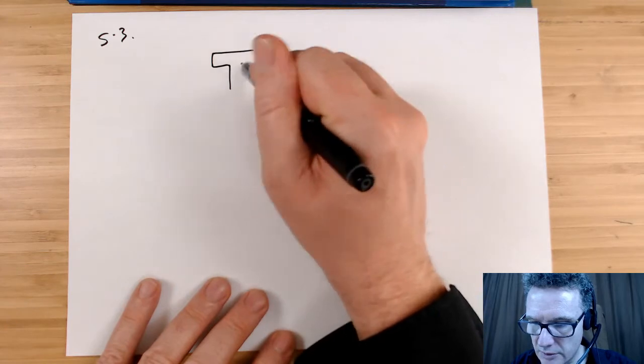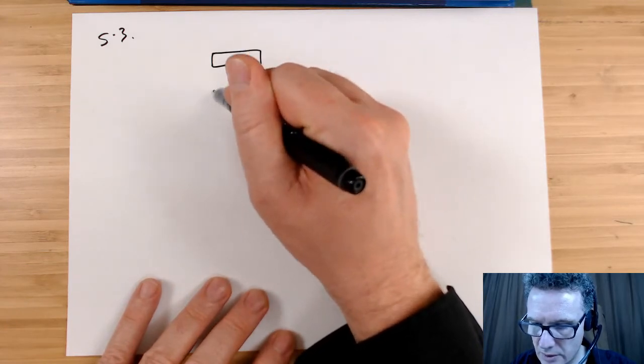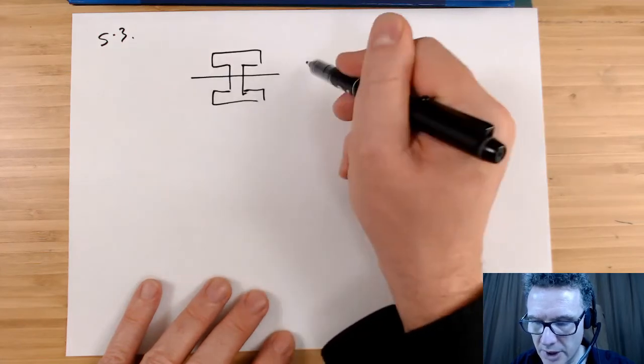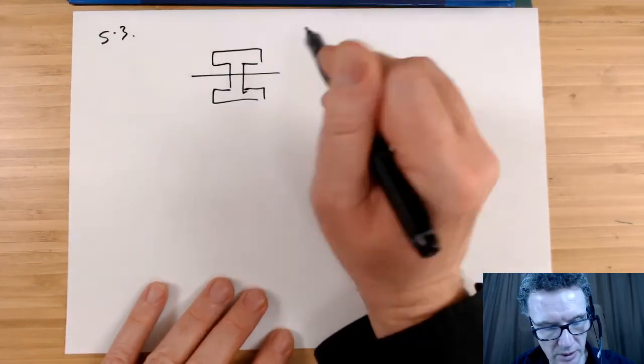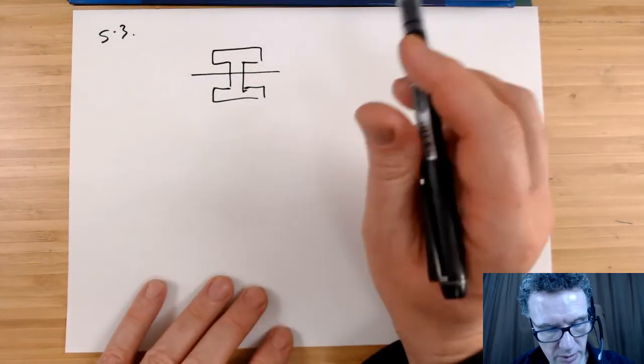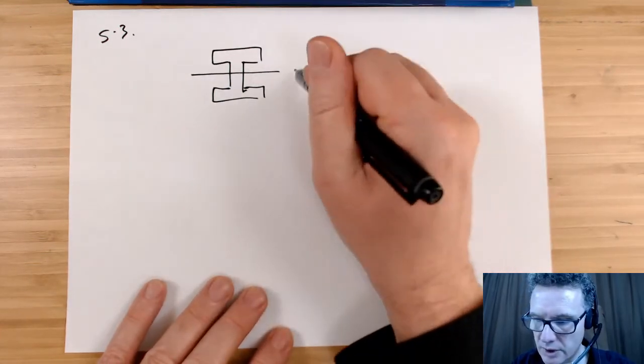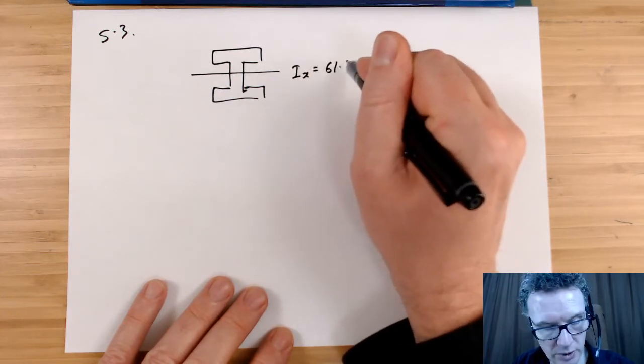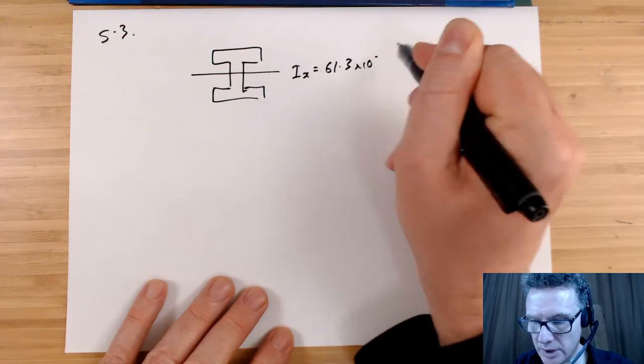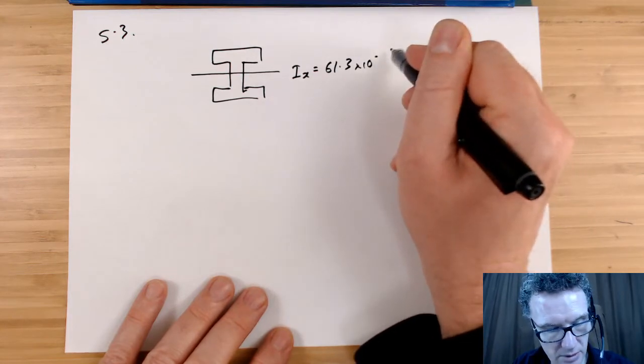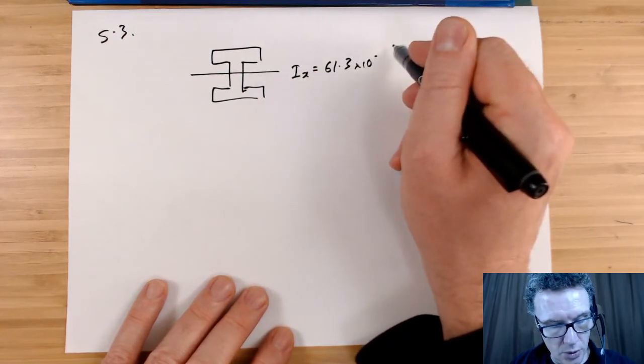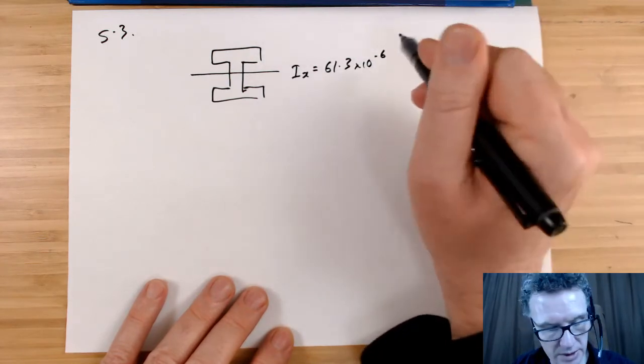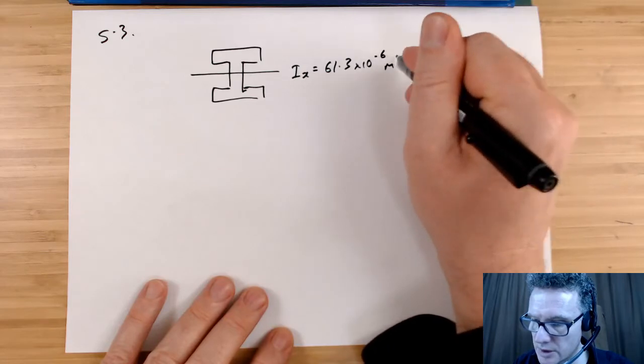Thank god I don't have to work them out. So if I'm looking from above I've got my x there. So I should be looking for the larger x value. So we've got I_x here is 61.3 times 10 to the minus 6, hopefully that's a typo, minus 6, that should be meters to the power 4.